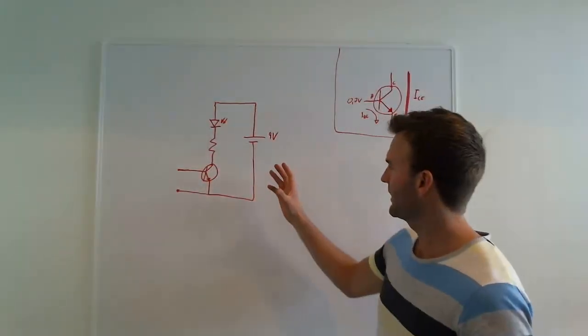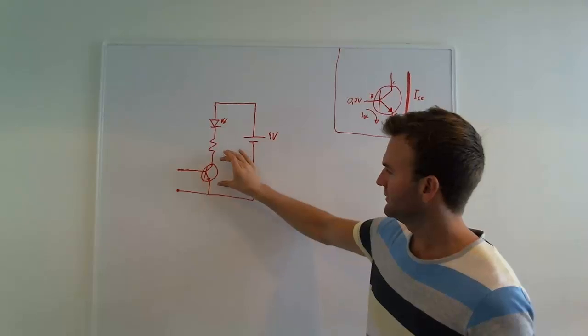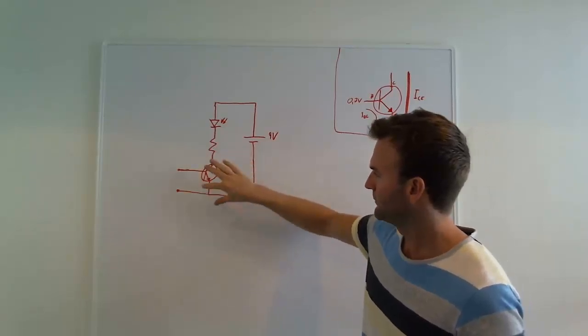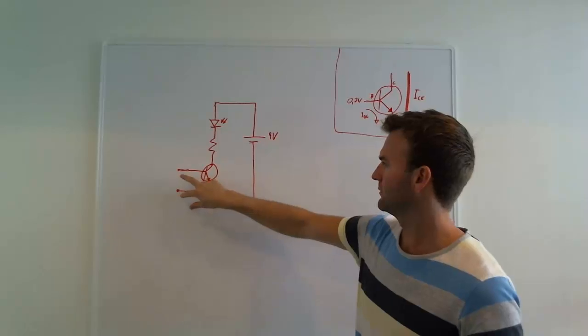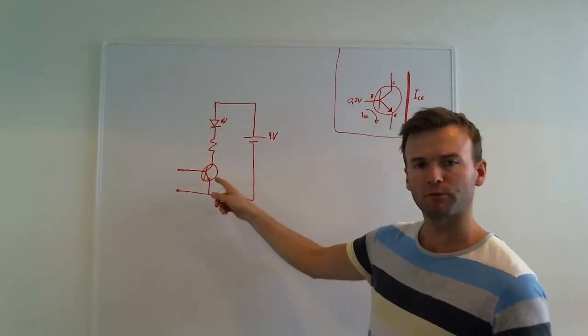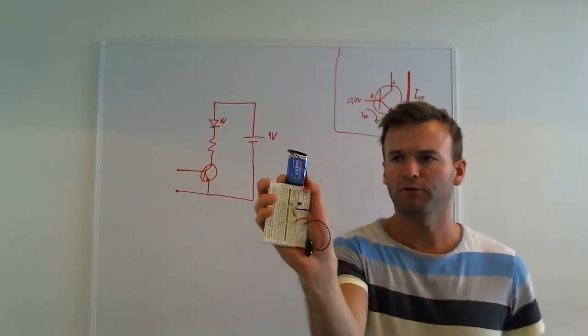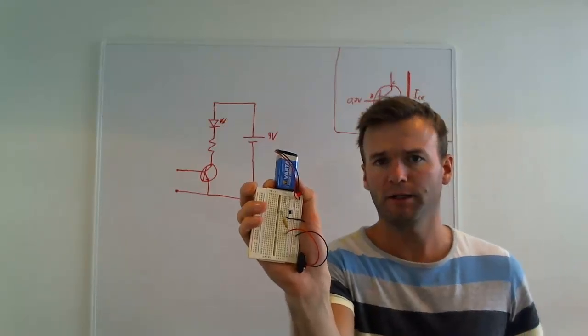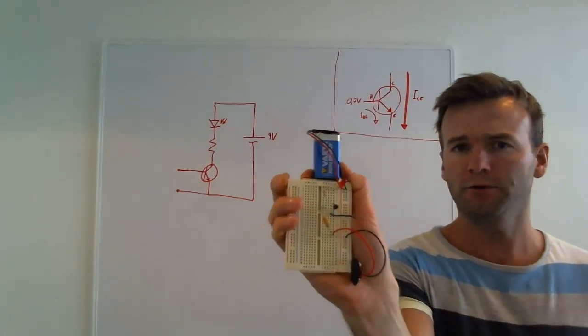Okay, so now I've connected a transistor here. There's nothing connected to the base of the transistor, so the transistor will be off. Here I have the circuit with the battery and the LED and the transistor.